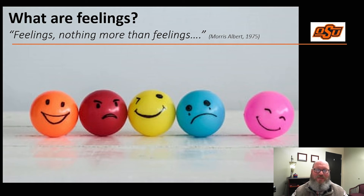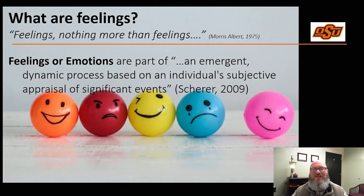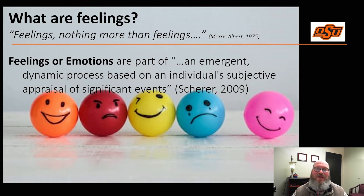What are emotions? According to Dr. Klaus Scherer, professor emeritus at the University of Geneva, he defines emotions stating: emotion is conceptualized as an emergent, dynamic process based on an individual's subjective appraisal of significant events. This definition, for which he has developed his component process model of emotion, suggests a synchronization of various physical and mental pieces. His model expands on the ABC Cognitive Model by Dr. Albert Ellis, founder of Rational Emotive Behavioral Therapy, and the Cognitive Model as proposed by Dr. Aaron Beck, the founder of Cognitive Behavioral Therapy.